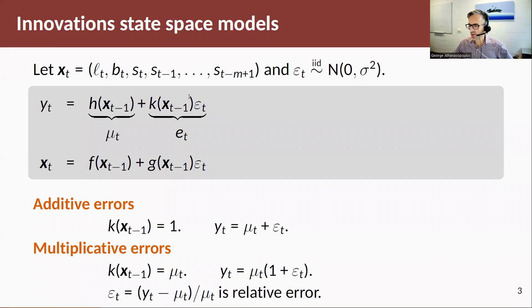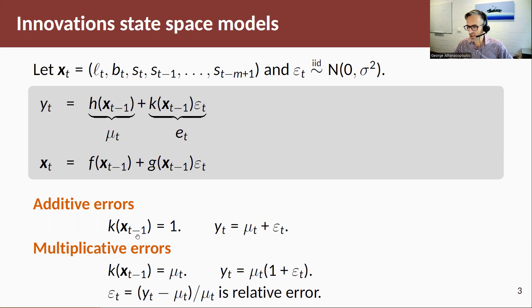We can use this generalized form to write down the likelihood function for all models in one go. For additive errors, k(x_t) — the function of the state — equals one, so all equations end up looking like y_t = μ_t + error, a mean plus an error. For multiplicative errors, k(x_t) = μ_t, so there's a common factor that comes out from both the first and second terms, and the observation equation is written differently.